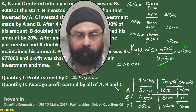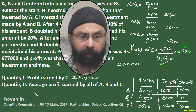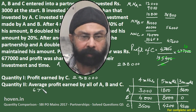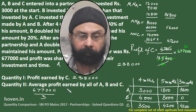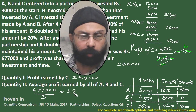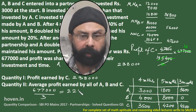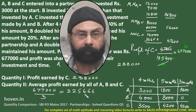And what is the average profit of A, B and C? The total profit is 67700. So the average will be 67700 divided by 3, because there are 3 persons. This works out to approximately 22566.